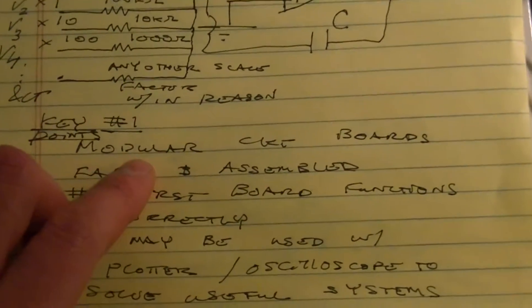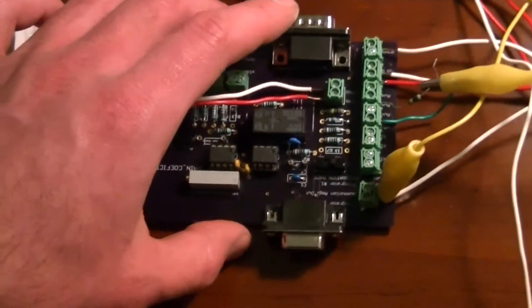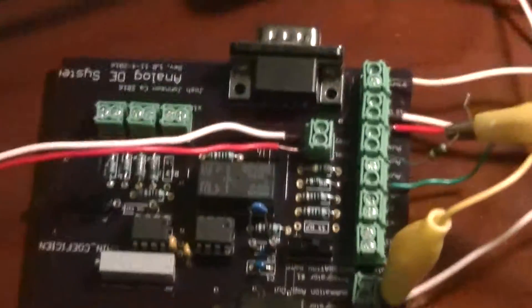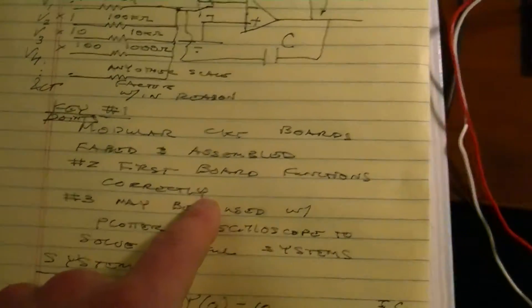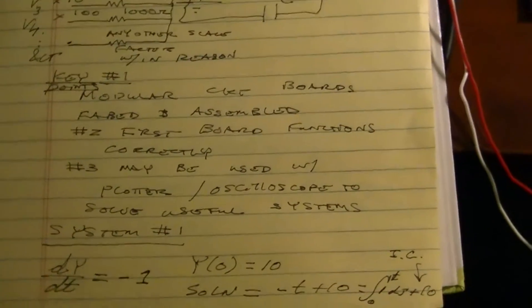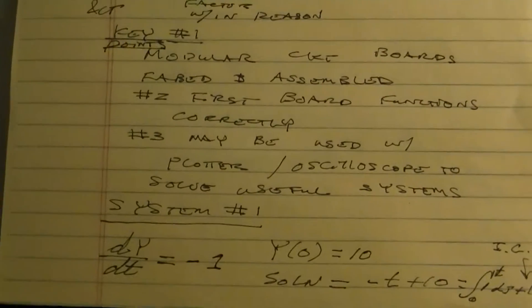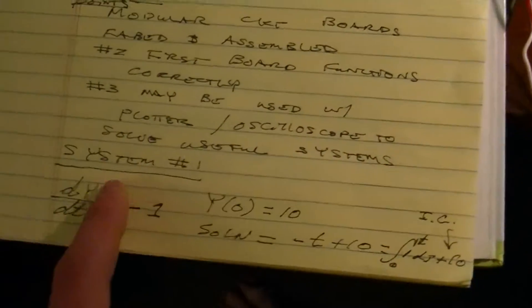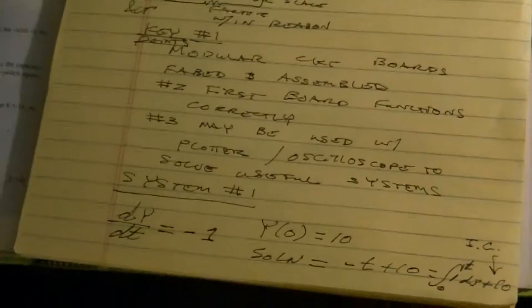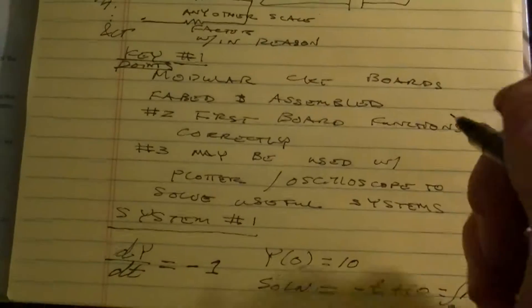My key points include: I'm including modular circuit boards to be fabbed and assembled. Each one of these can do one integral and one summation, and I have three thanks to the generous gift of Georgia Tech, which fabbed these and bought the components. Second thing is I've been able to get this board to work correctly. I've tried since December 5th and I haven't had any luck at all getting it to work, but recently it's worked due to the fact that one of these power pins was not connected right. But now that it was re-soldered, the board has worked as advertised. And my third point is that we can use these with a plotter or an oscilloscope, or technically a sampler, to solve useful systems. And that's the whole point of computing, to solve a useful system.